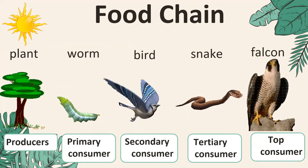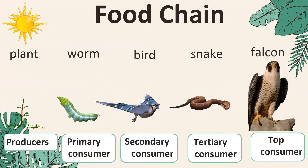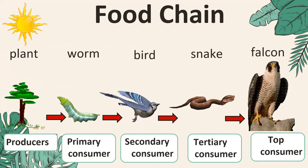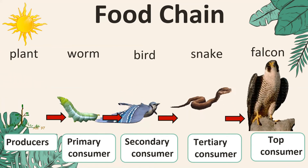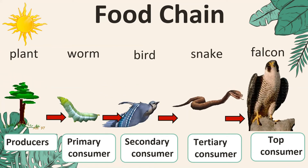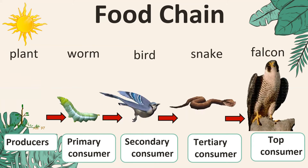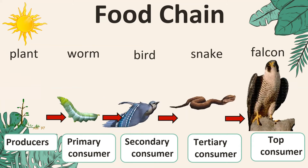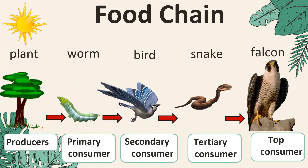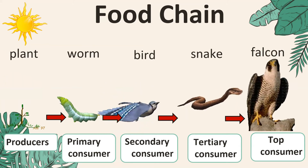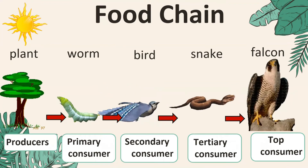A bird eats the worm, a snake eats the bird, and finally a falcon eats the snake. We use an arrow to show the direction where energy moves from one living thing to another. The arrowhead always points at the consumer. Every food chain starts from a producer, and energy moves from producer to consumers in a fixed way.